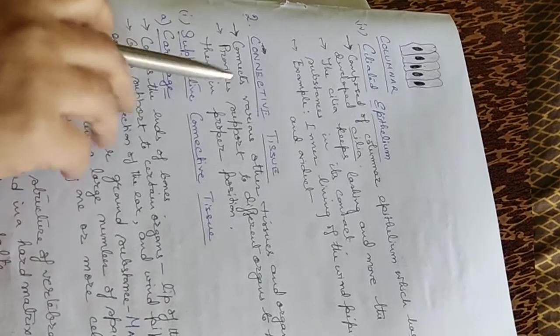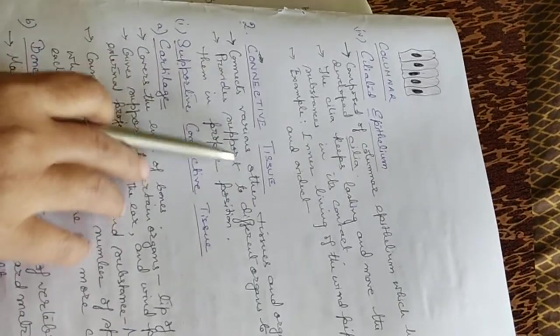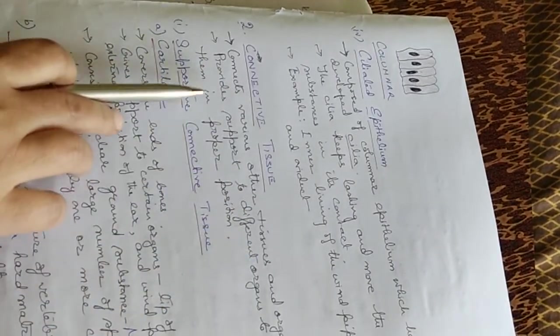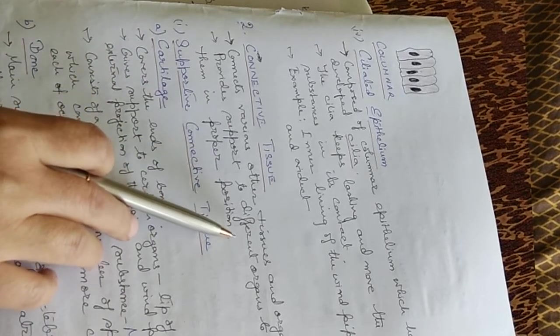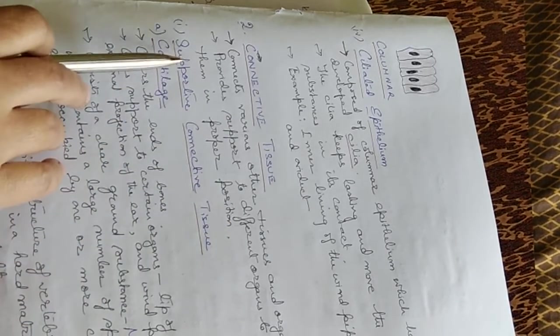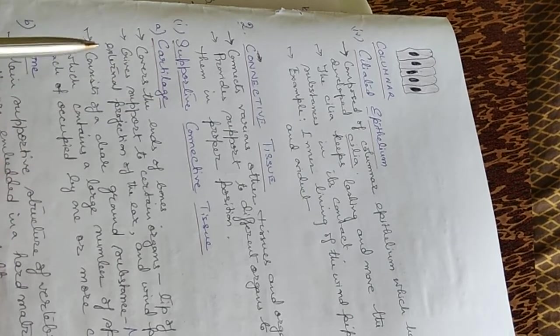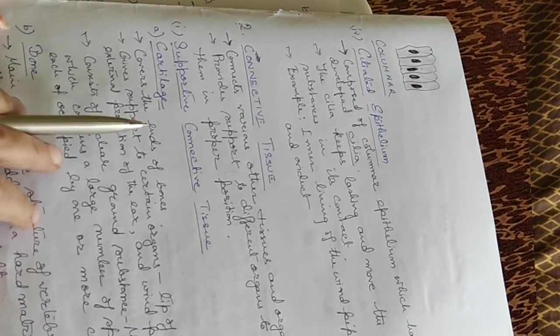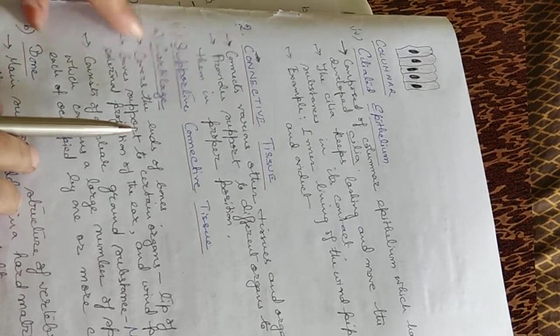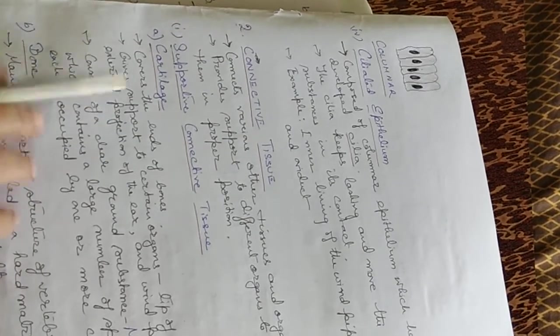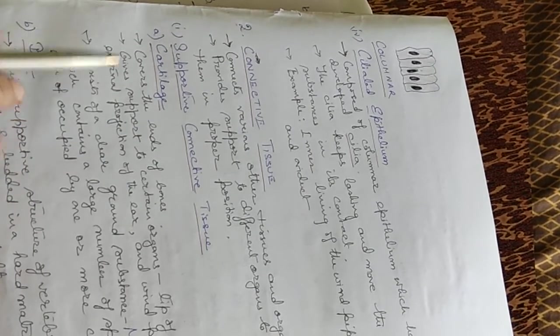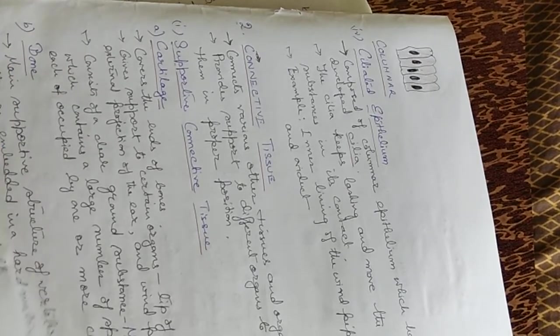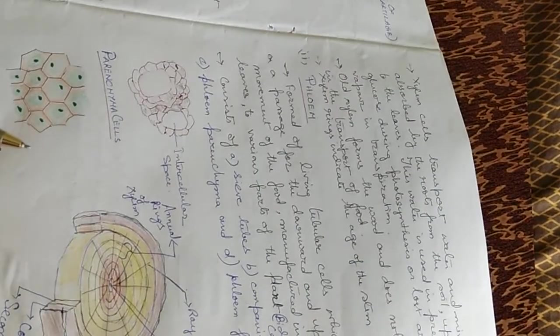Let me come to connective tissue. It connects various other tissues and organs, provides support to different organs to keep them in proper position. Connective tissues are of different types like supportive connective tissues: cartilage and bone.